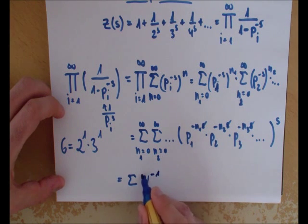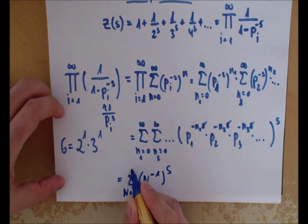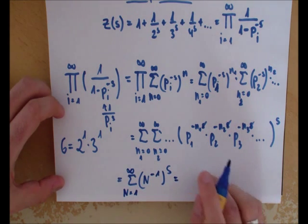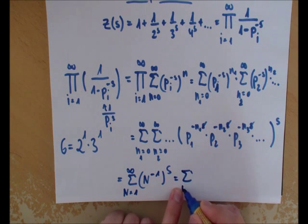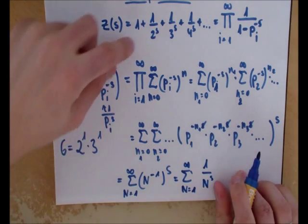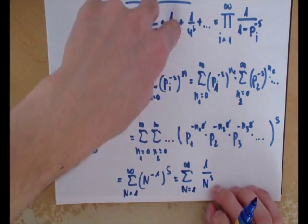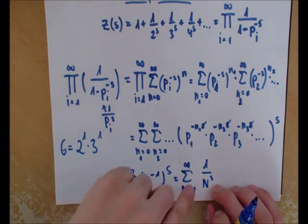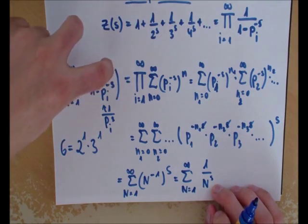You have to understand n to the (-1) to the s. So n is starting from 1 to infinity. If I rewrite this in another manner, then you will see what we actually got. Just compare this with our starting point.